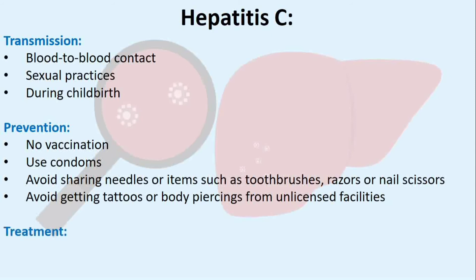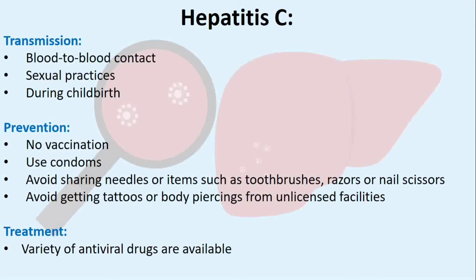Treatment: Treatment for chronic hepatitis C aims to eradicate the virus. It often involves a combination of pegylated interferon and ribavirin, and there is increasing use of potent direct-acting antiviral drugs, with and without interferon. People with different genotypes respond differently to treatment, some more successfully than others.